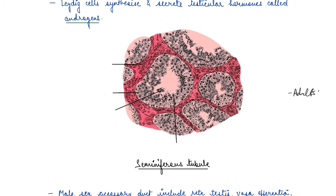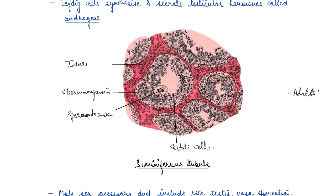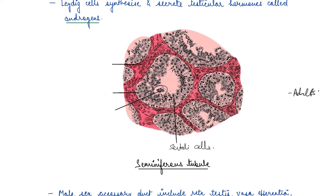So here in the diagram of the seminiferous tubule, you see that there are sperm cells, which are spermatogonia, then you have developed sperms, which are spermatozoa. Then you have Sertoli cells inside, which help in nourishment. And then you have interstitial cells, which are also known as Leydig cells, and these cells synthesize and secrete the testicular hormones, which are nothing but androgens. These hormones are very much required for the formation of sperms.